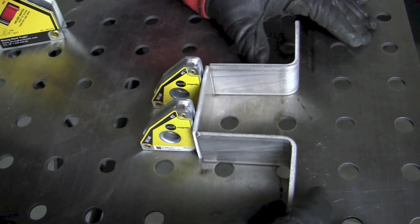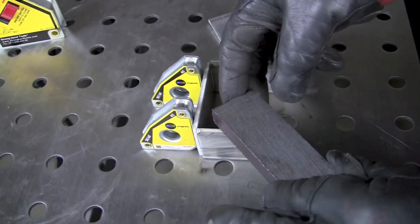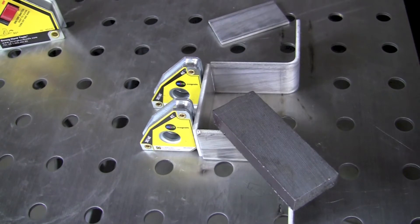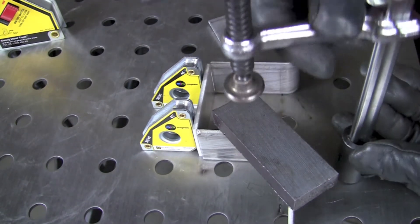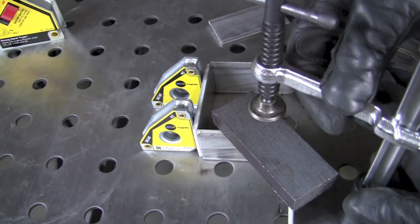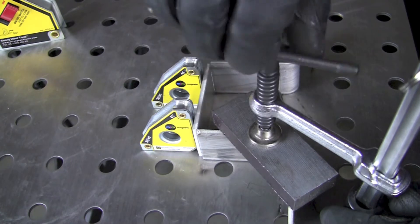Once again using the same technique, using these magnets as a straight edge there. Also put another piece of flat bar down onto the top of it, and then once again positioning the table clamp to hold that piece in alignment when we're making the tack welds.